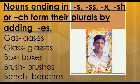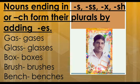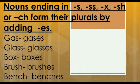Words ending in S, SS, X, SH, or CH form their plurals by adding ES. Examples: Gas becomes Gases, Glass becomes Glasses, Box becomes Boxes, Brush becomes Brushes, Bench becomes Benches.